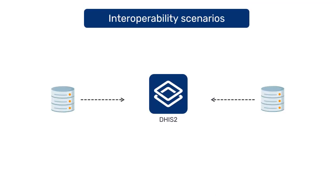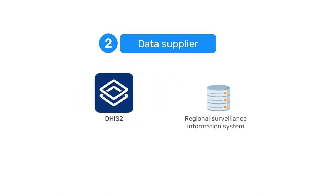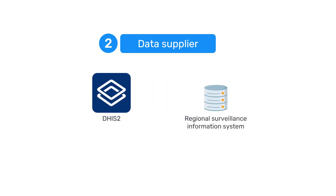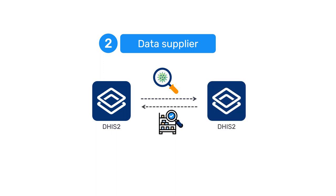In other scenarios, instead of using DHIS-2 to combine data from other systems, data in DHIS-2 may be sent to other systems that require it. For example, DHIS-2 may send national disease surveillance data to a regional surveillance information system to facilitate cross-border surveillance of infectious diseases. In some cases, this may mean exchanging data between two or more DHIS-2 systems.